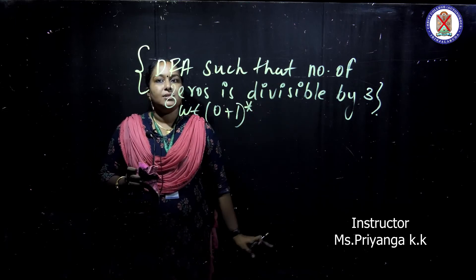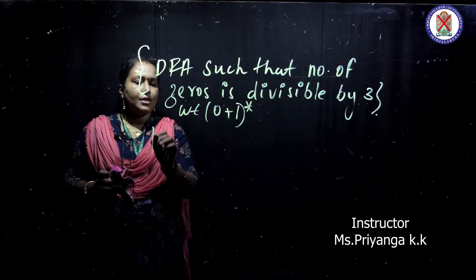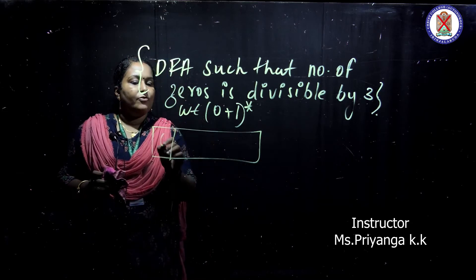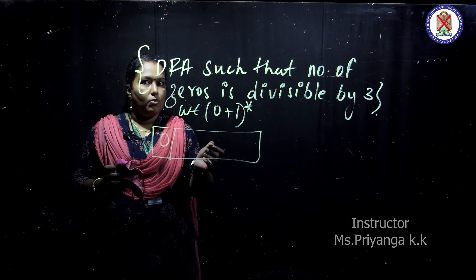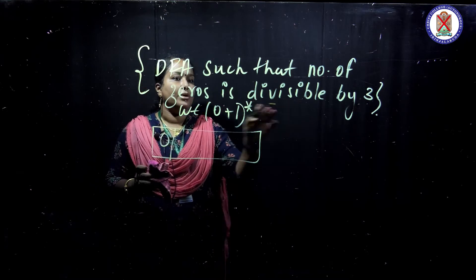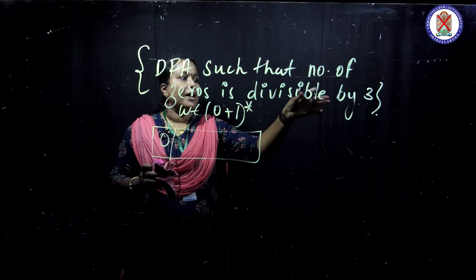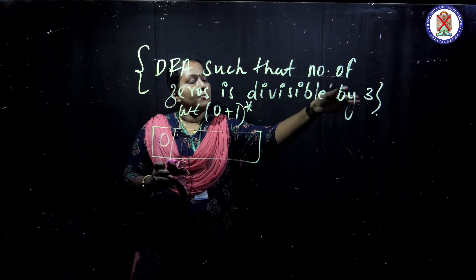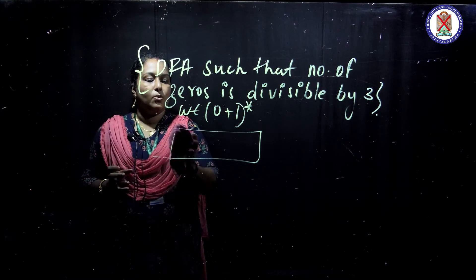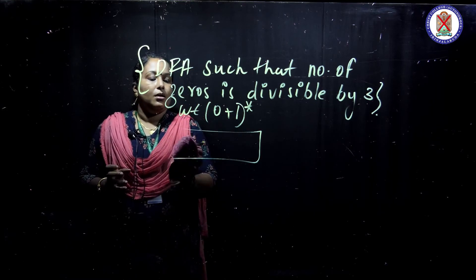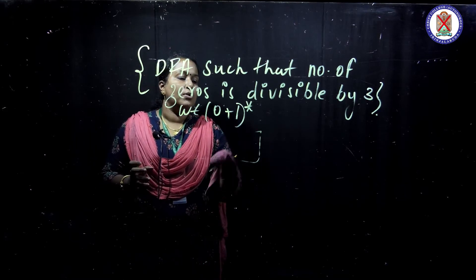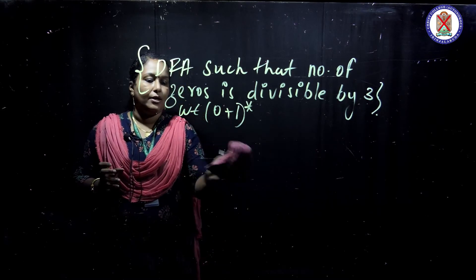This is different from the problems we have already discussed. Here we have to check whether the number of zeros is divisible by 3. But DFA has no memory and also no power for counting. So how can we do this?